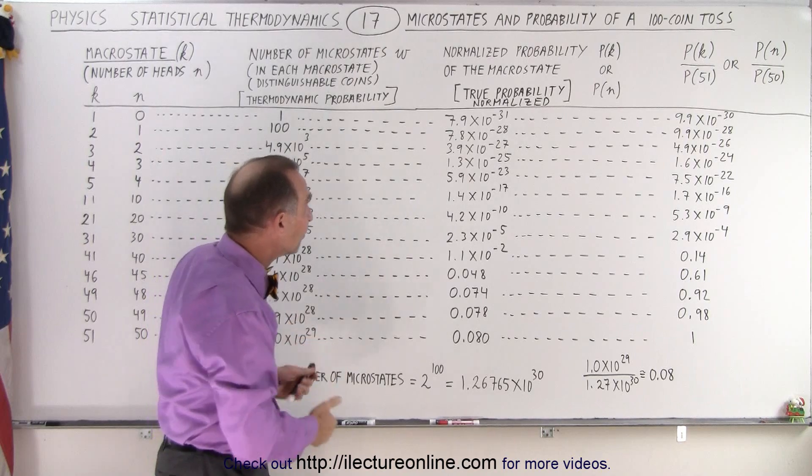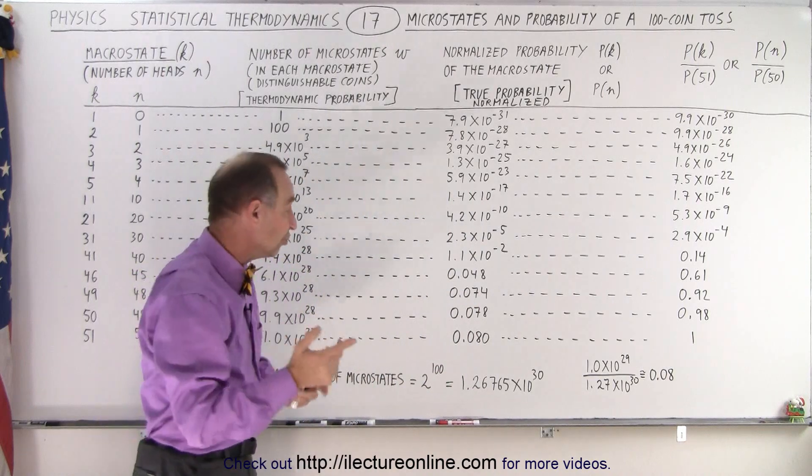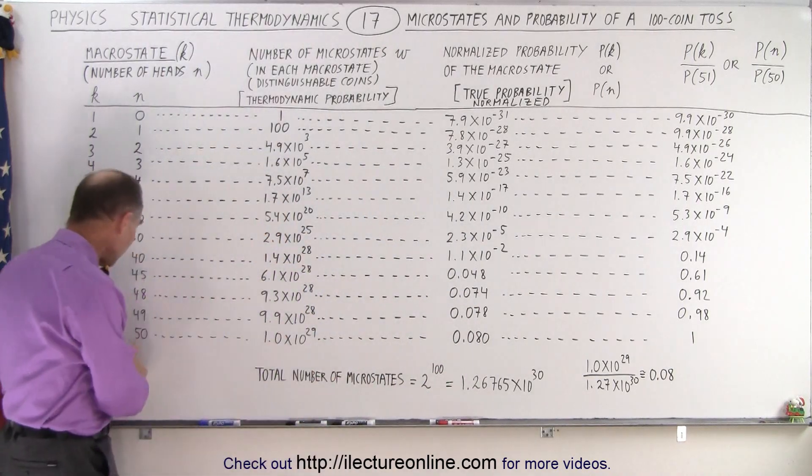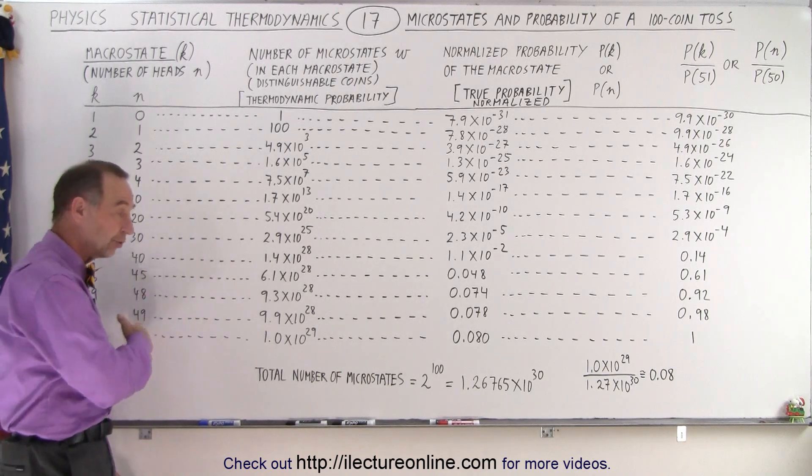And then you can see, of course, that if you add up all the various probabilities, they should all add up to 1,